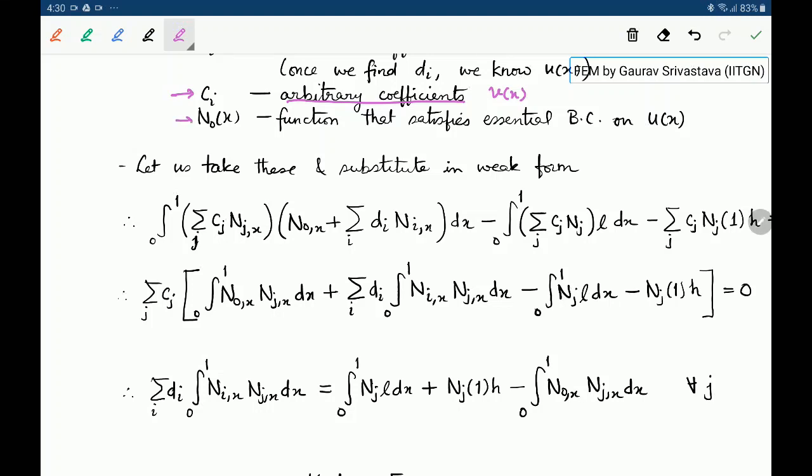And N₀ of X is a function that satisfies the essential boundary condition on U of X. Recall that we have said that the Nᵢ for i not equal to 0, these are functions which are 0 at EBC locations.